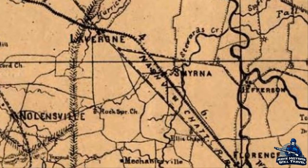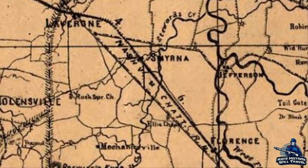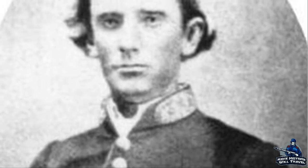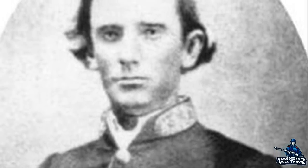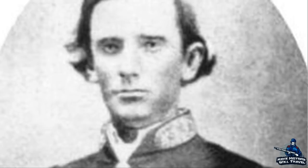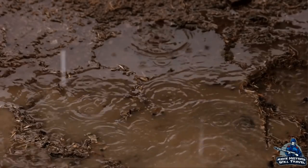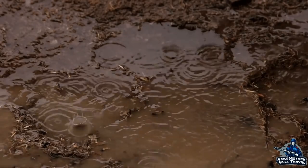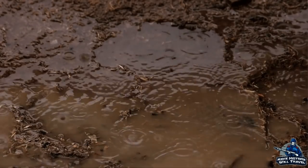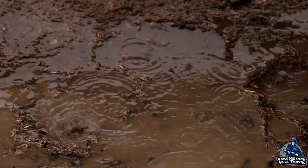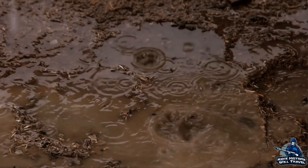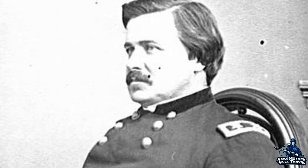Bragg's force in Murfreesboro numbered about 35,000 troops. Bragg asked Brigadier General John A. Wharton how long he could delay the advancing Federals — four days was the cavalry commander's reply. Wharton did a good job of harassing the Union army, but it was the weather, the rain and sleet and mud, that truly slowed down the blue troops. By December 30th, Rosecrans' tired force was just a few miles from Murfreesboro. Also on that day, Alexander McCook's right wing aggressively probed the Confederate line, but by sunset both armies prepared for the carnage of the next day.